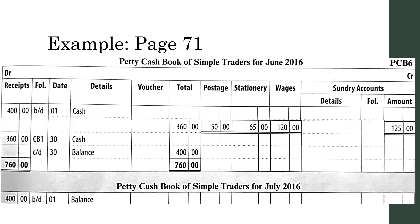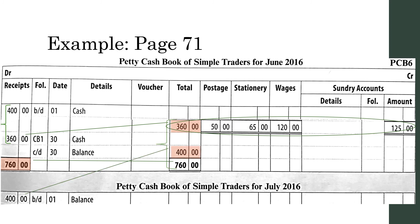Let's look at an example on page 71 of your textbook. Step 1: Find the totals. Step 2: Restore the impressed amount. The amount spent is then equal to the amount received. Step 3: Balance the petty cash. First, find the total on the debit side, write the total on both sides, calculate the difference, and this is then your balance brought down for the next month, which is also equal to the impressed amount.